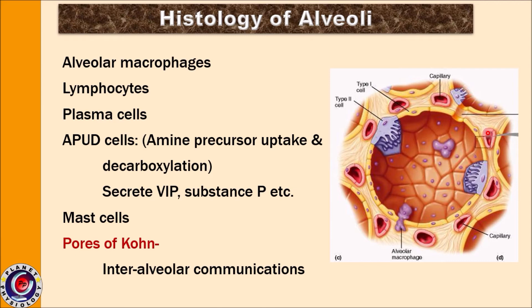Apart from pneumocytes, other cells are present in the alveoli, including alveolar macrophages shown in violet, as well as lymphocytes and plasma cells. They play a very important role in removing pathogens or particulate material that succeeds in reaching the alveoli. Certain cells called APUD cells — amine precursor uptake and decarboxylation — secrete substances like VIP (vasoactive intestinal peptide) and substance P. Mast cells are also present and are responsible for allergic reactions. Individual alveoli are interconnected through pores called pores of Kohn.